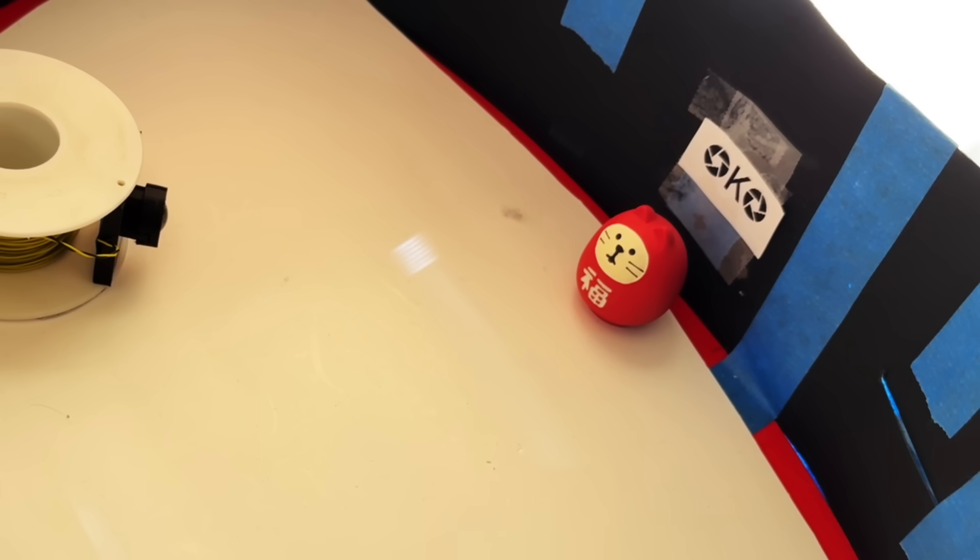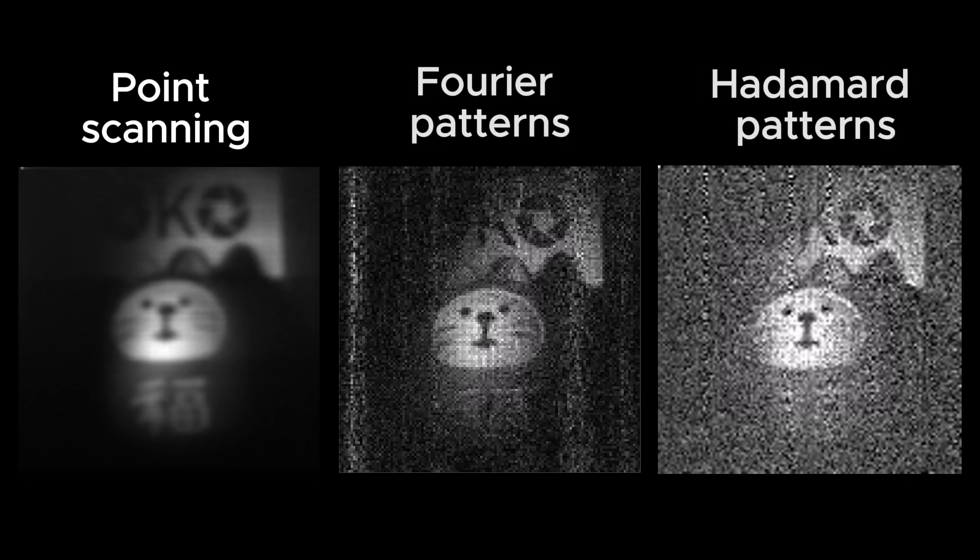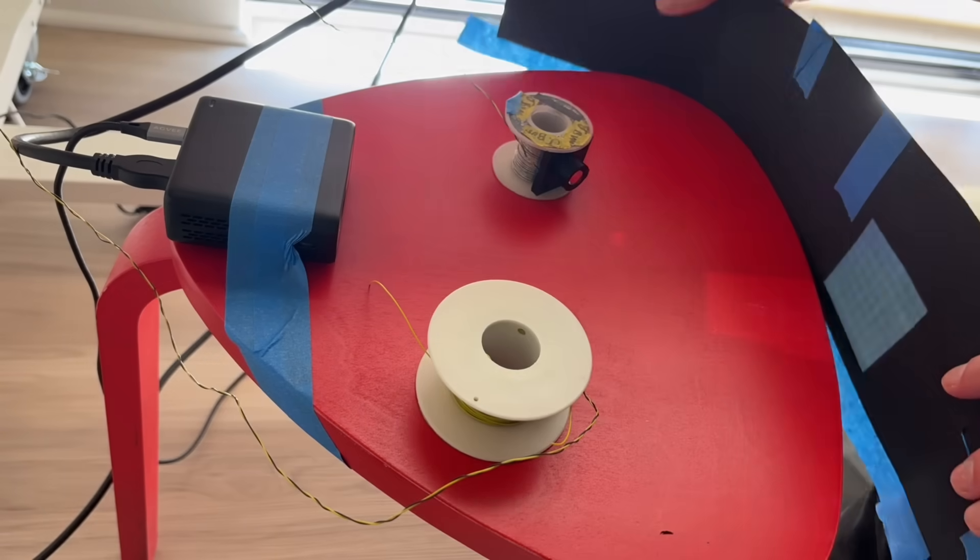I wanted to construct one more image of the scene using point-by-point scanning, like I did at the beginning of this video. When I put this image next to the compressed sensing results, it's clear that the point scanning looks the best. But it's really not a fair comparison. I did not take any clear notes of the parameters across these conditions, like exposure time, number of patterns.